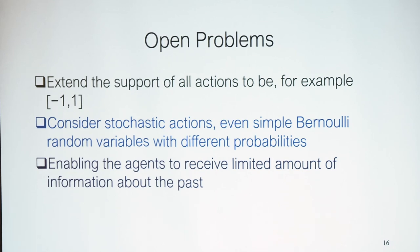As for open problems, the natural one is to extend the support of all actions to be between minus one and one. Another interesting direction is to consider stochastic actions, or to enable agents to receive a limited amount of information about the past. Thank you very much.